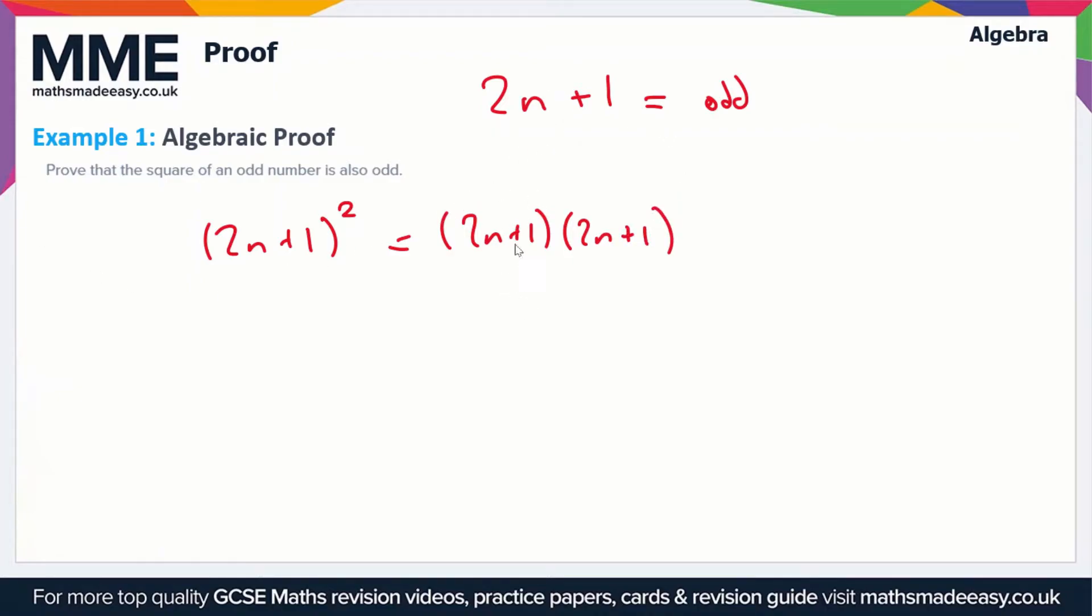We want to use the FOIL method for expanding double brackets. That's First, which is 2n times 2n, giving us 4n². Outside, which is 2n times 1, gives us 2n. Then Inner, which is 1 times 2n, gives us 2n again.